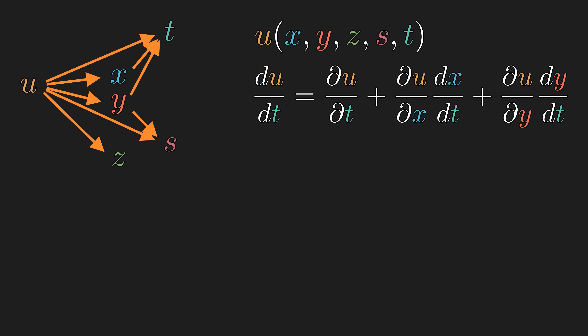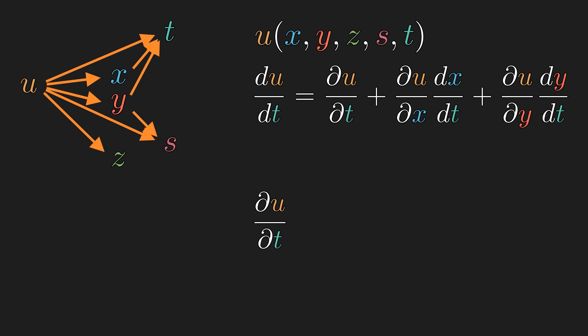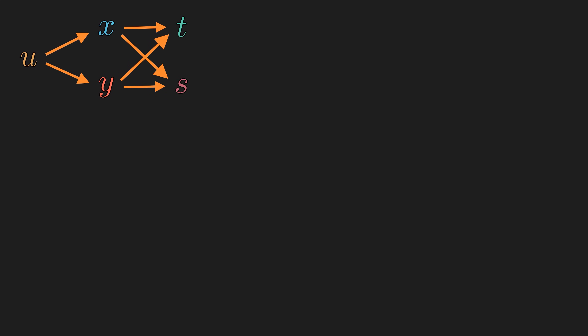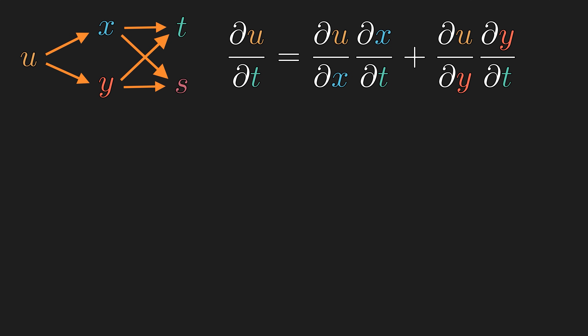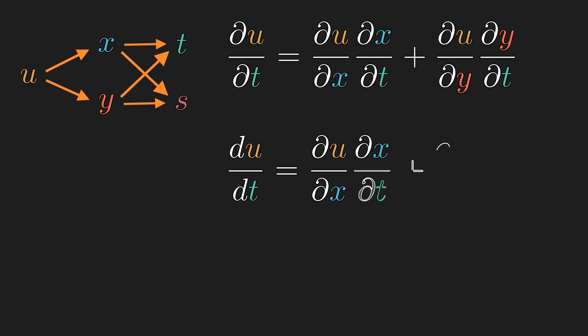How would convention M fit into this picture? Ordinary derivative du/dt doesn't make sense, as U has terminal dependence on three variables. The partial derivative serves the role of the total derivative, following every chain down to T. But we don't have a symbol for explicit partial derivative with respect to T, so convention M was not really designed for a scenario like this. Going back to an earlier scenario using convention P: the partial derivative of U with respect to T is zero, since there is no explicit dependence. The total derivative du/dt is the derivative with chain rule, following every path down to T.